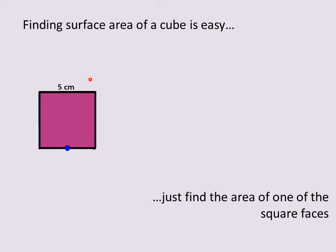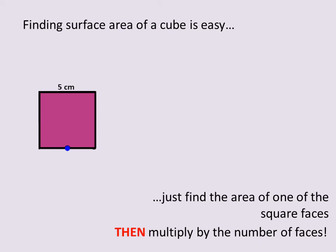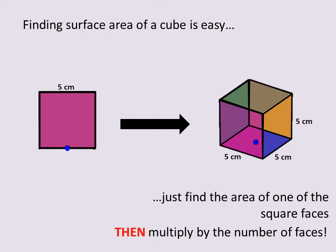For example, it would be 5 squared or 5 times 5. So to find the surface area of a cube: first find the area of one of the square faces, then multiply by the number of faces. Remember, there are six faces in a cube, so you find the area of one square face and multiply that answer by six — the total number of faces in a cube.